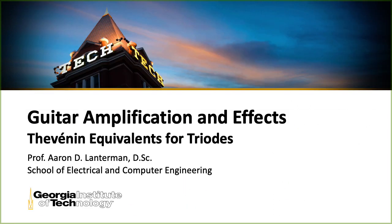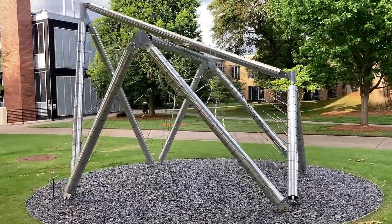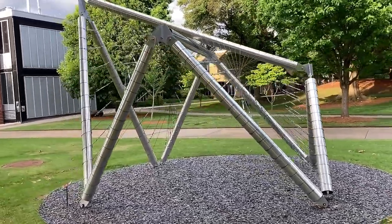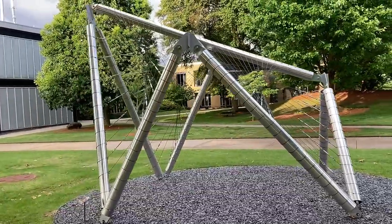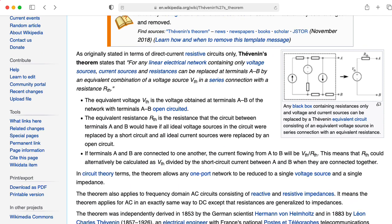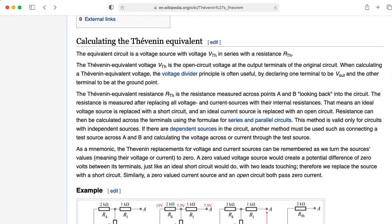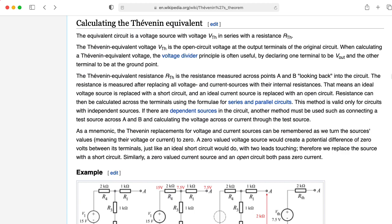For the rest of this course, after today's lecture, I'm pretty much going to try to avoid using that small signal model directly, and instead I'm going to use Thevenin equivalent circuits looking into either the plate or the cathode of the triode that are presented in terms of a Thevenin equivalent of the circuitry on the other side of the tube.